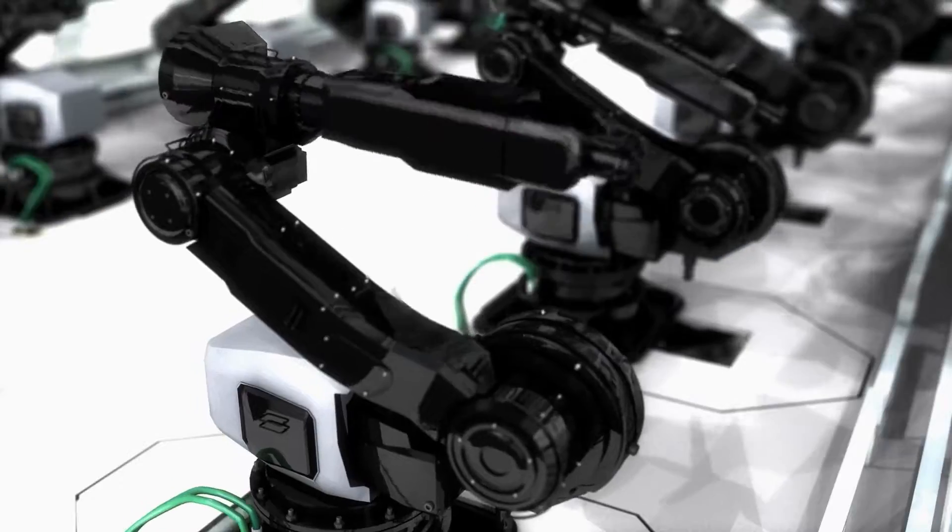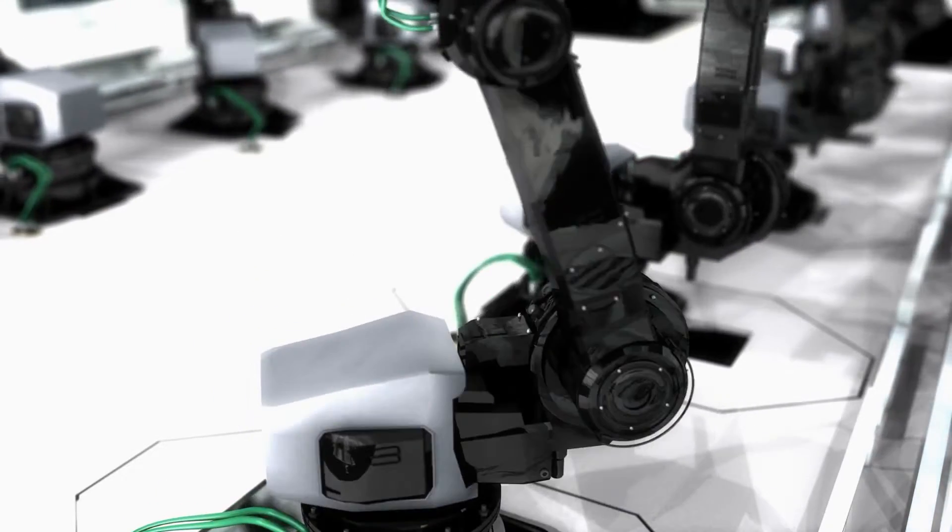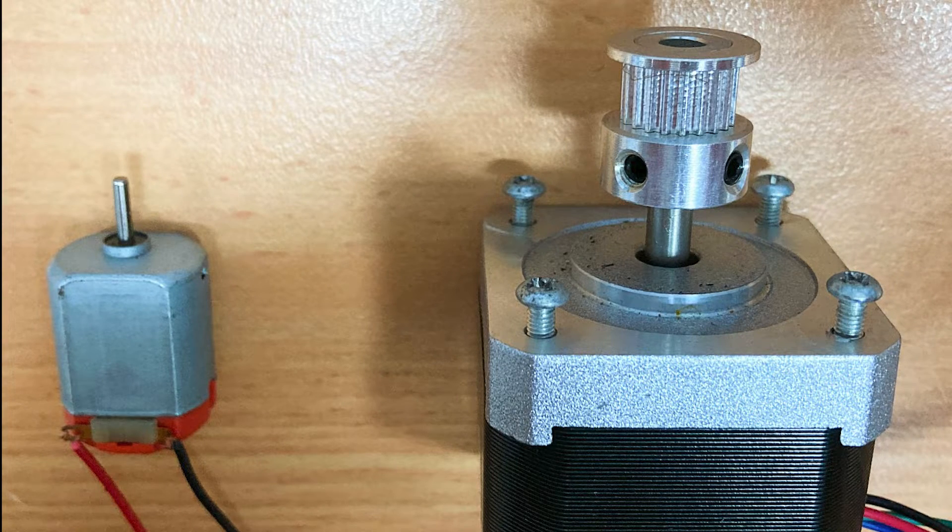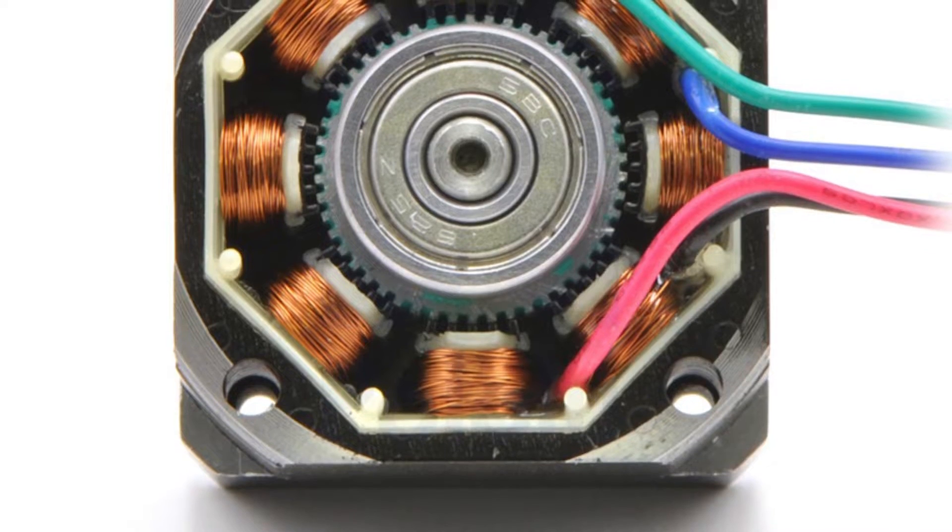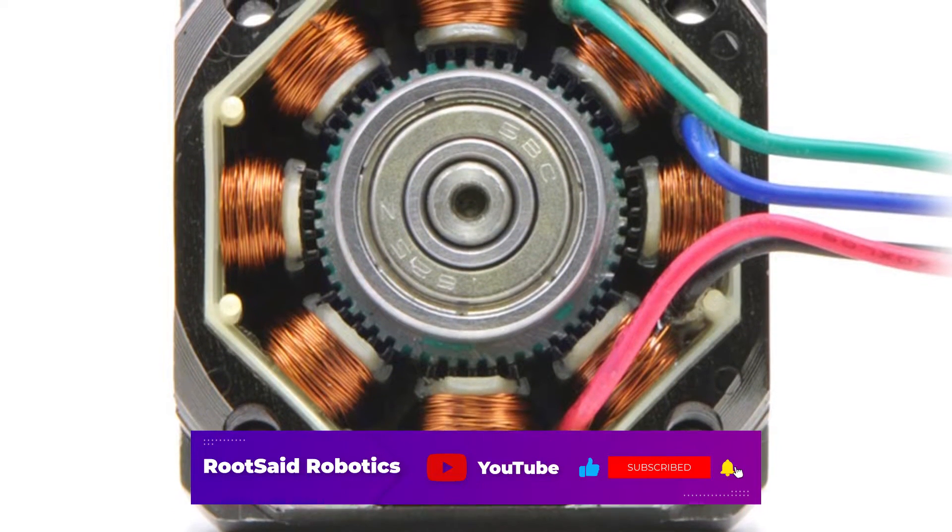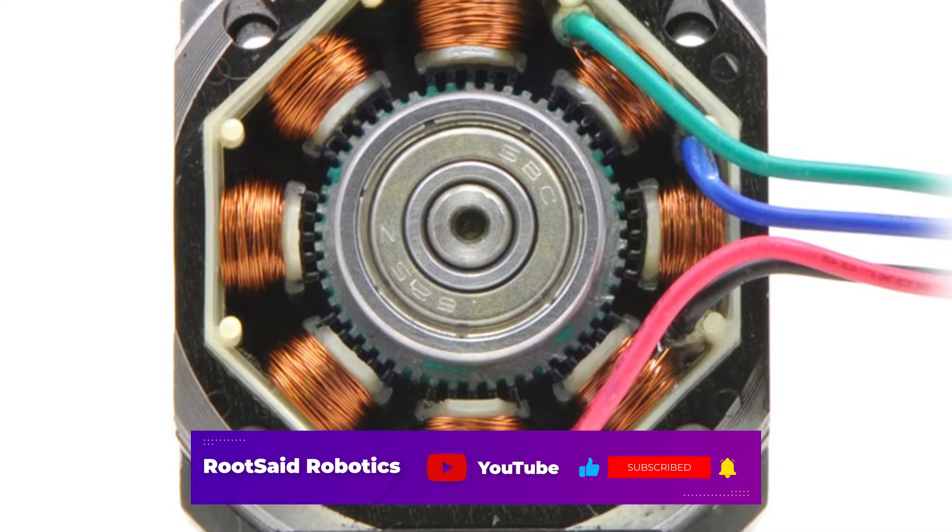In order to understand how this control is achieved, it will be better if we take a look at the mechanism of the motor. The rotor of the stepper motor is usually a permanent magnet. Around the magnet you will see windings of the stator.